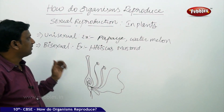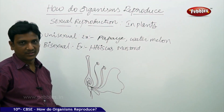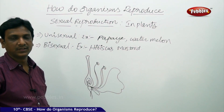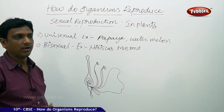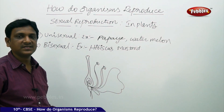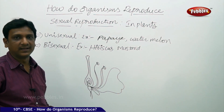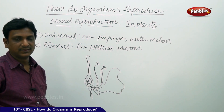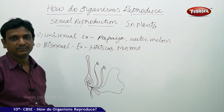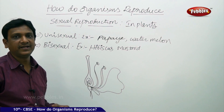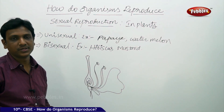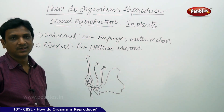Now let us see sexual reproduction in plants. The flower is the reproductive part — better we say it is a unit that consists of reproductive parts.